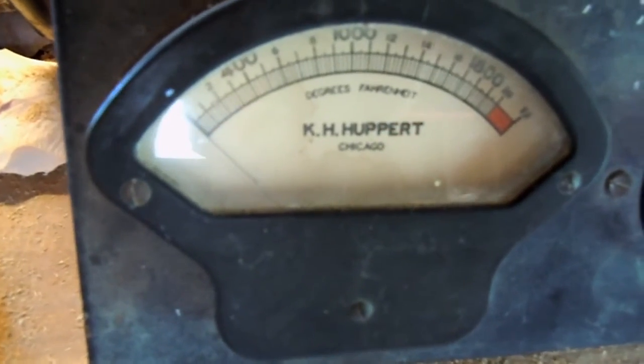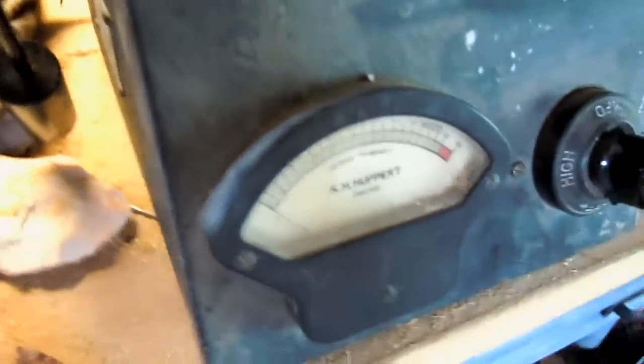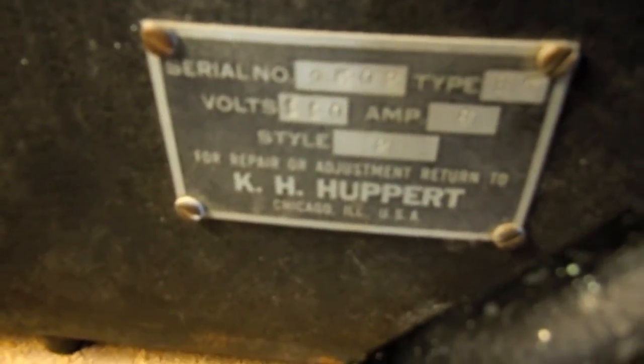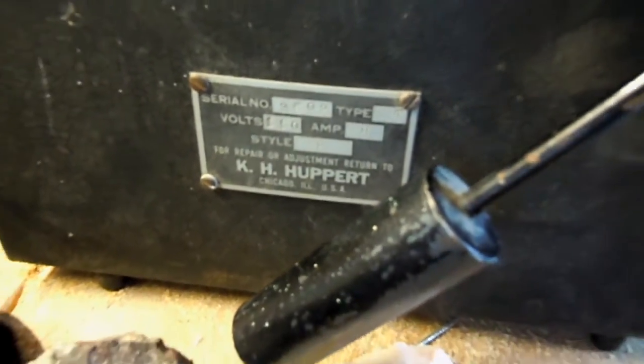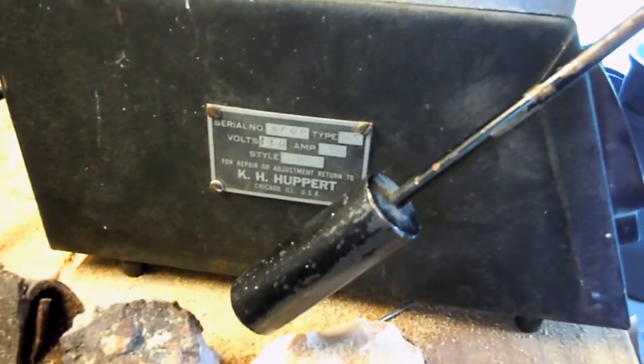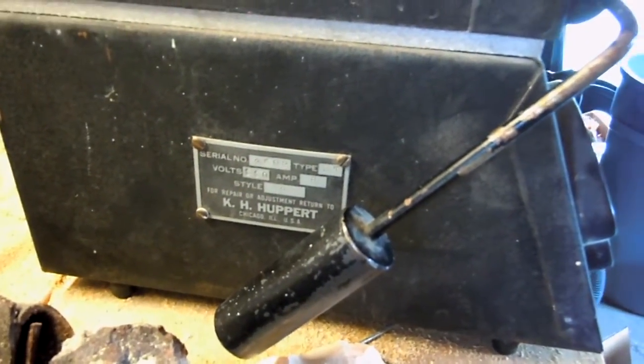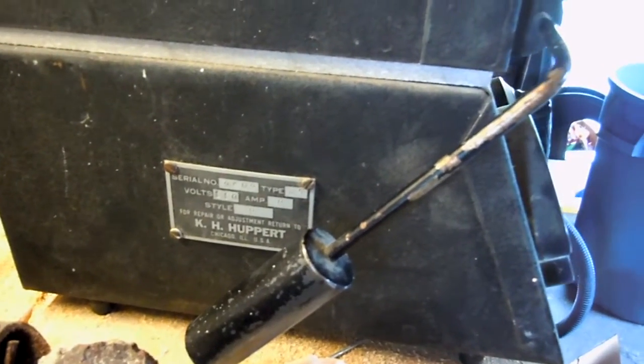It's a KH Huppert. I wish there was more information on this particular furnace. I was looking online and I couldn't find any old manuals or anything like that. But it's a type ST, whatever that means. It's a 110 volt and it's an 8 amp. It's a style two. So apparently these were produced by KH Huppert in Chicago, Illinois.